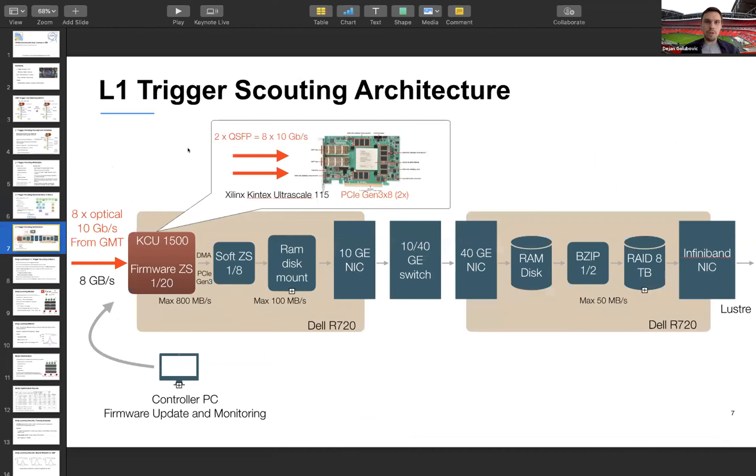The scouting architecture consists of various components. We have an input board which is most interesting for us because this is where we want to implement deep learning, and then we have various components to stream, compress and store the data. In the previous demonstrator a Xilinx KCU1500 was used, and now it's planned to be replaced by Micron board, but we'll get to that later.